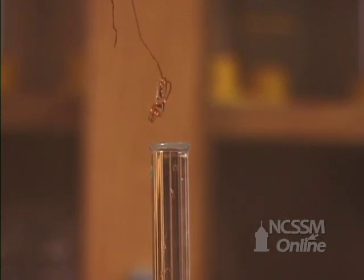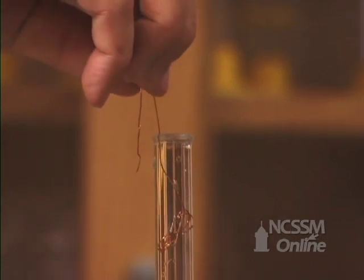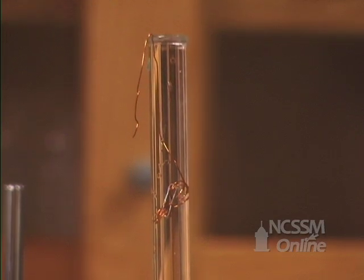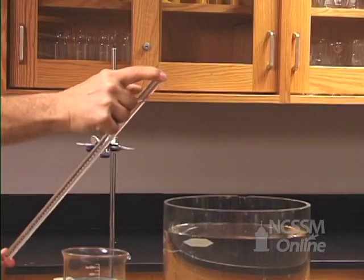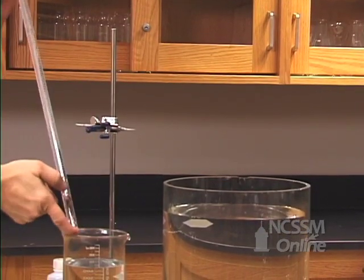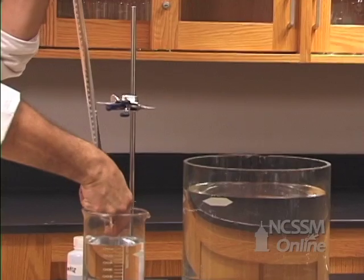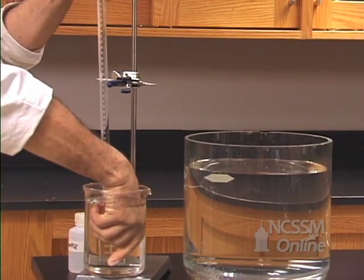We will now place the magnesium ribbon in the solution held in place by the copper wire. We will place our finger over the mouth of the gas collection tube. We will invert the tube into a large beaker of water.